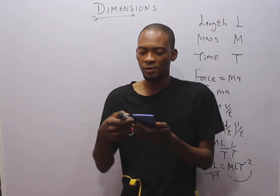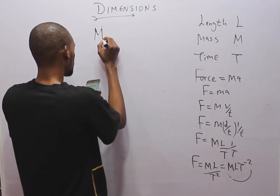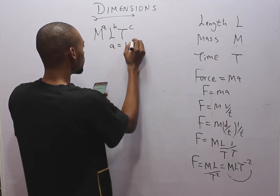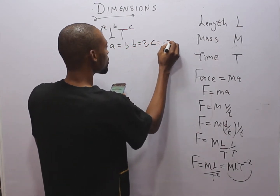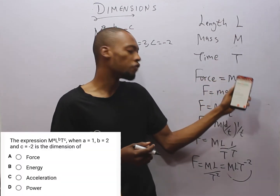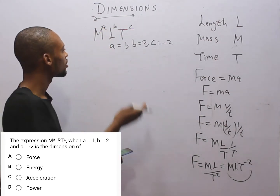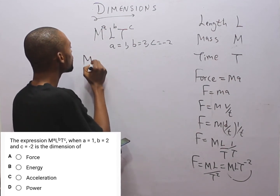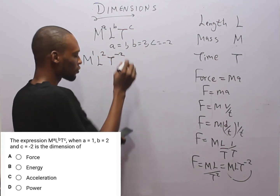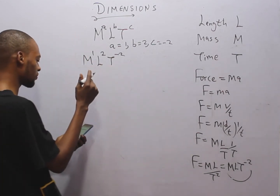The first question gives the expression M raised to the power of a, L raised to the power of b, T raised to the power of c, where a equals 1, b equals 2, and c equals minus 2. We are asked what quantity this is the dimension of. We already derived that the dimension of force is M·L·T⁻², and now we are given a dimension and asked to identify the quantity.